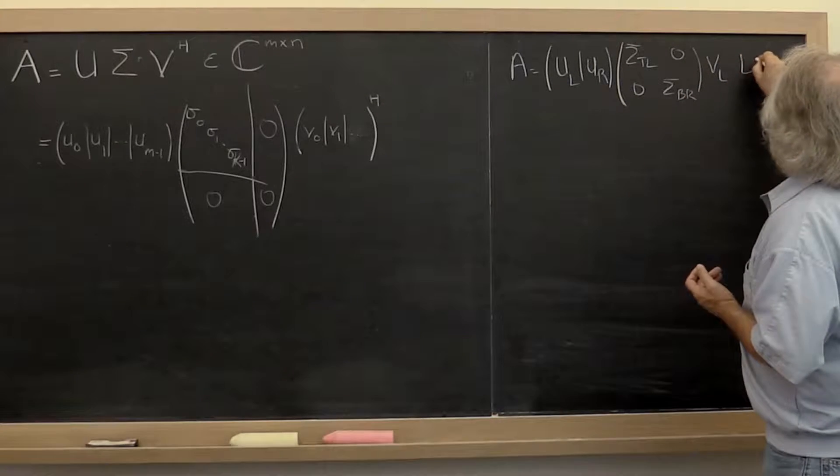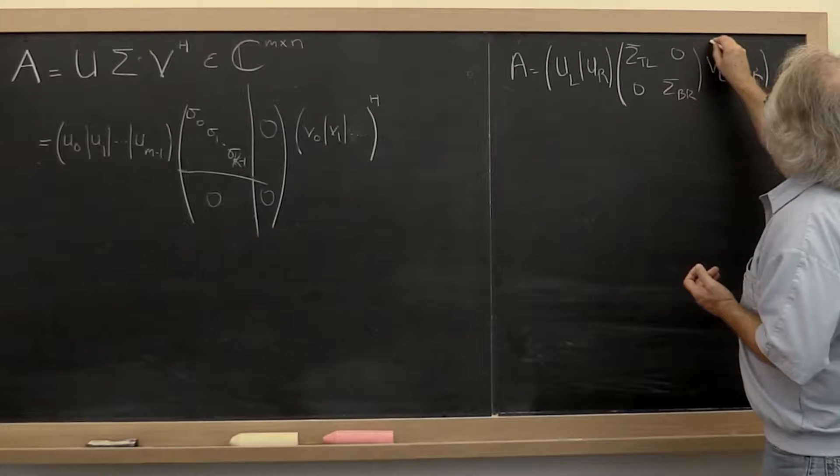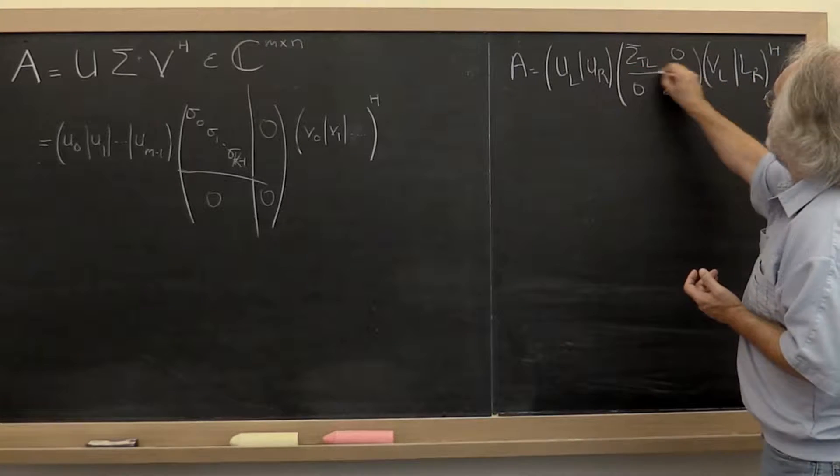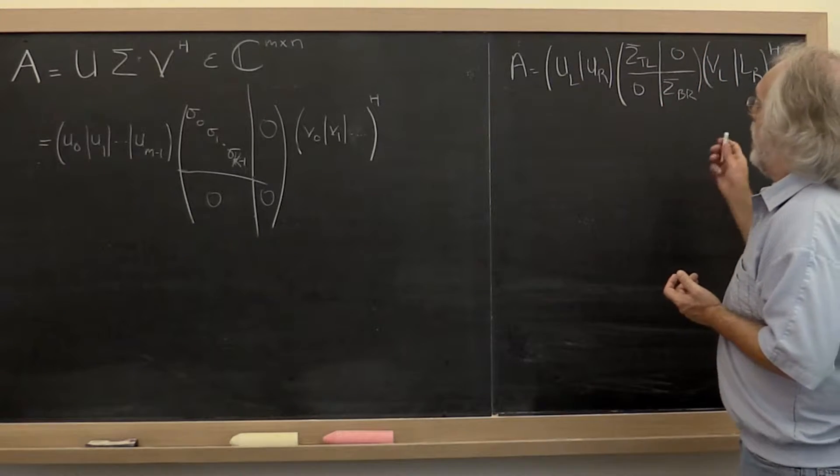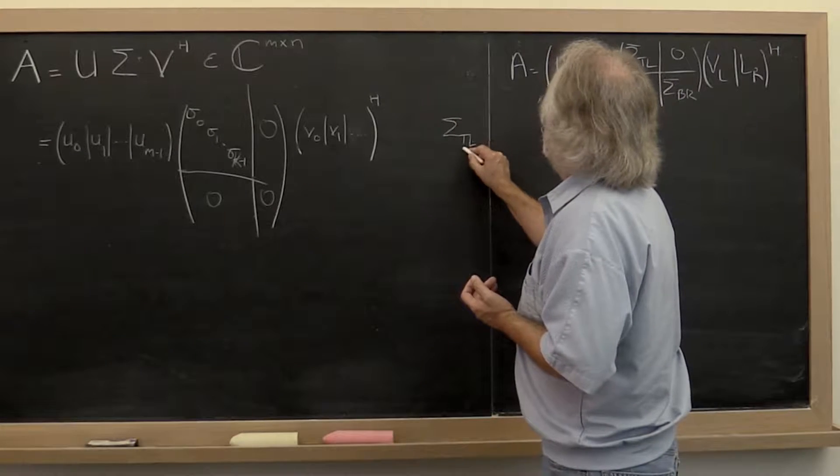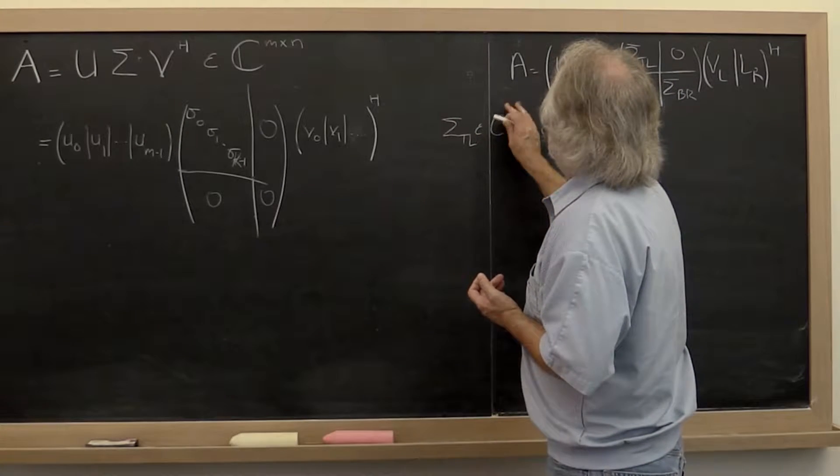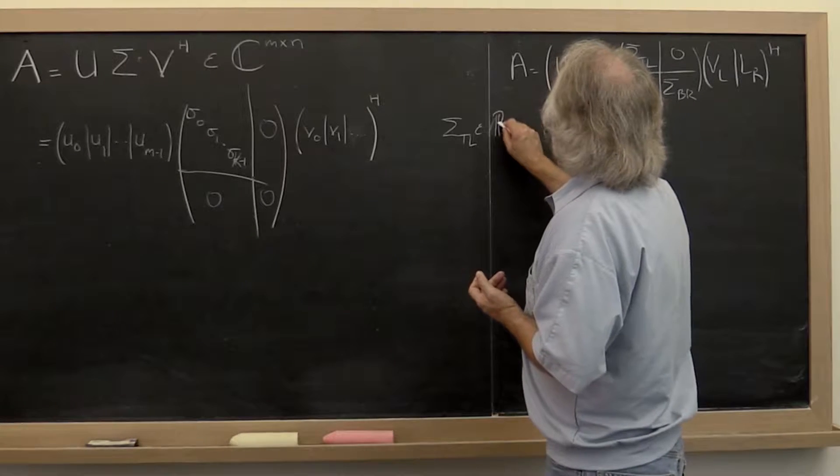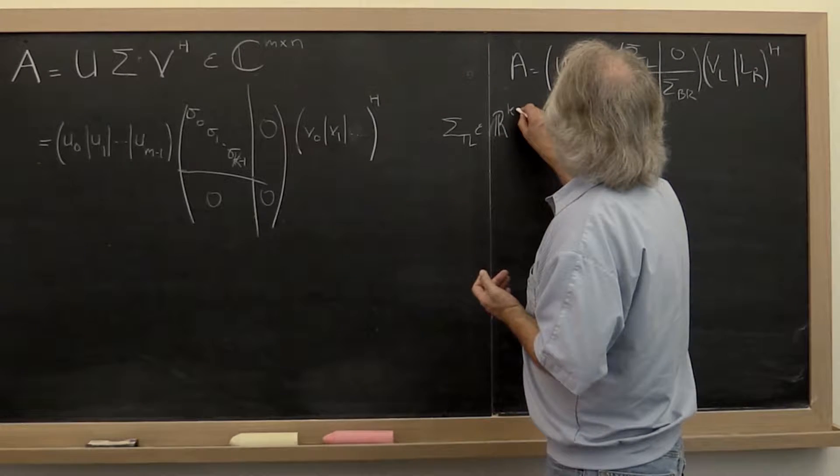...times V left, V right, Hermitian transpose, where sigma top left is, let's see, its real value, so it is k by k.